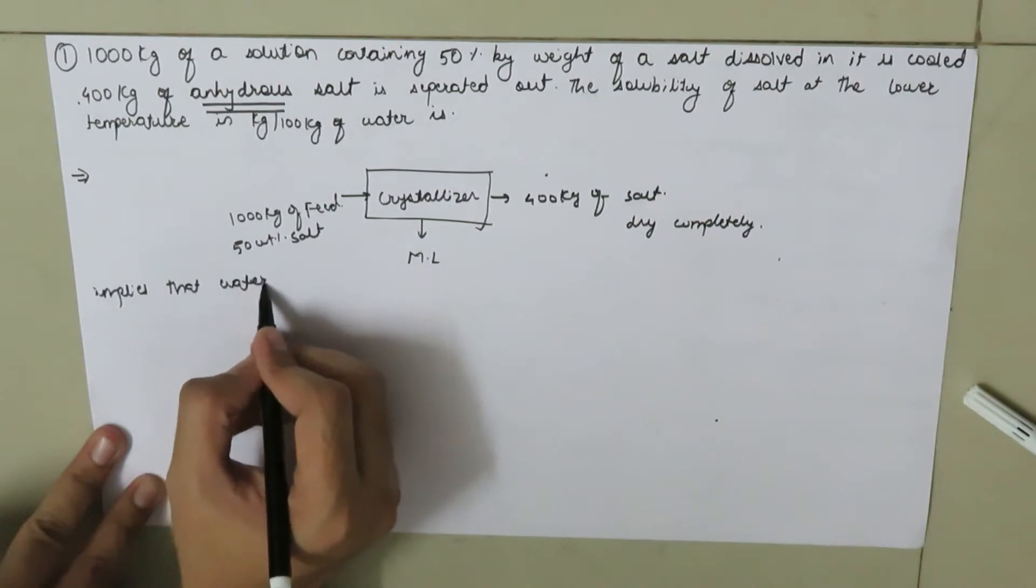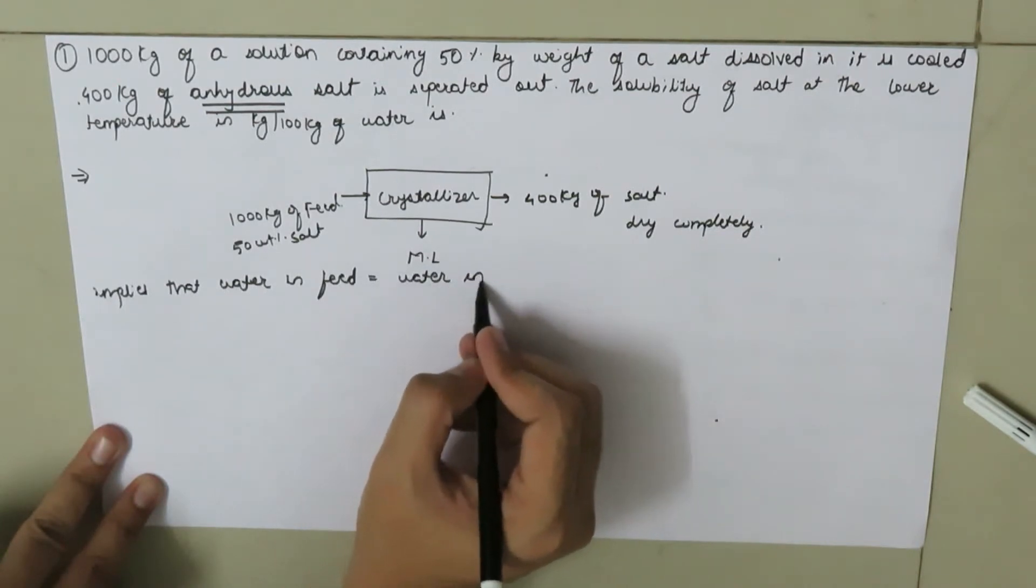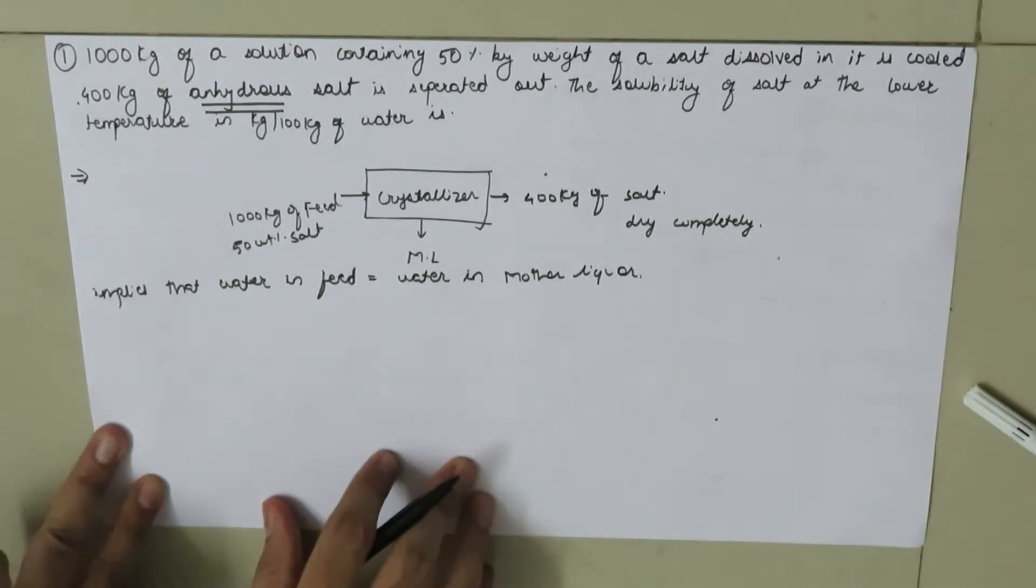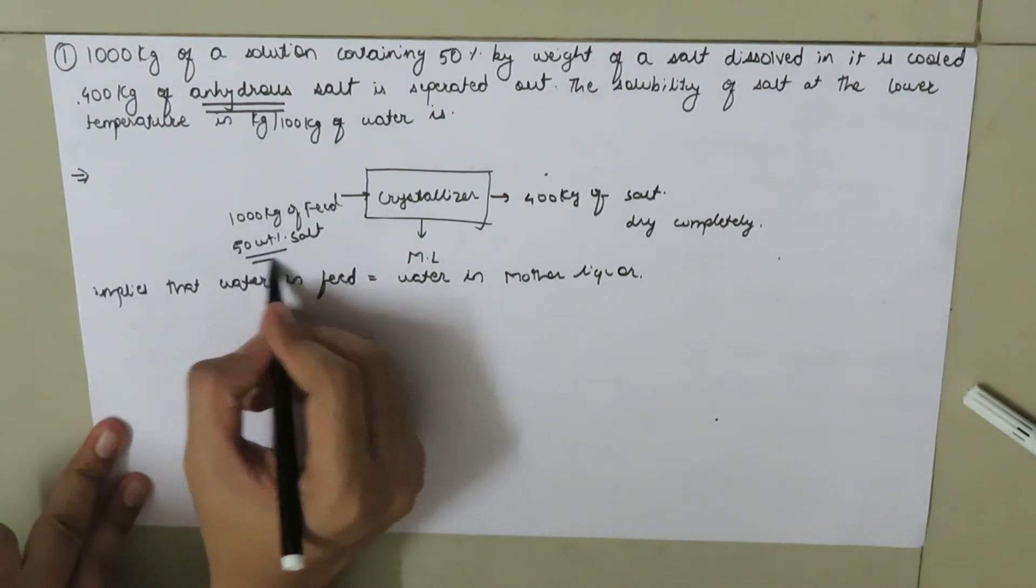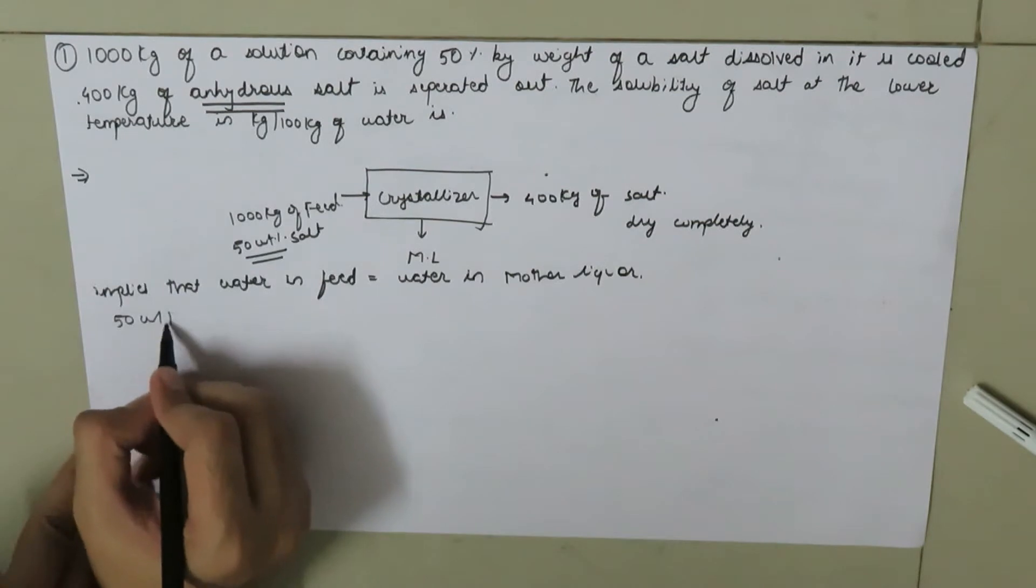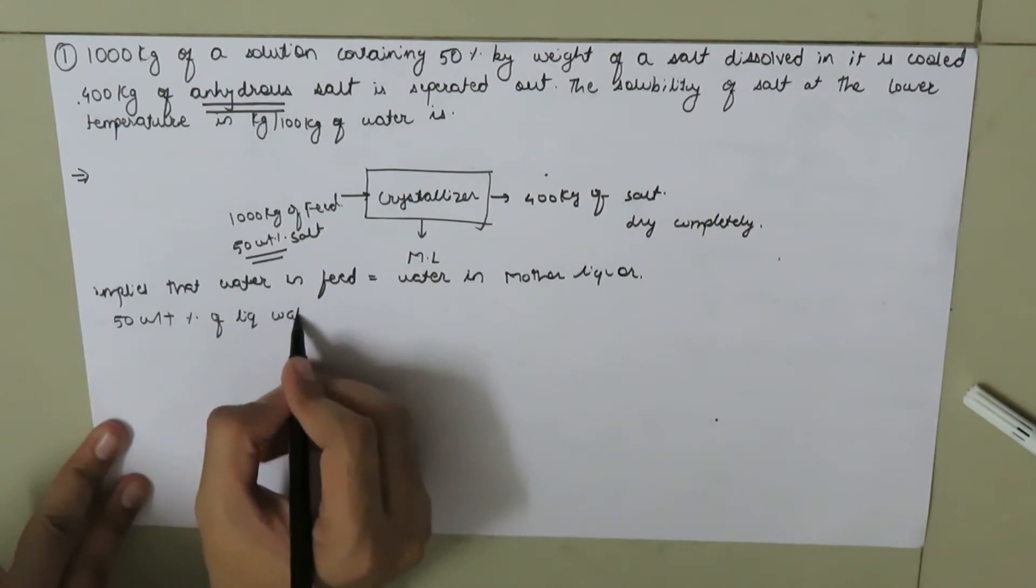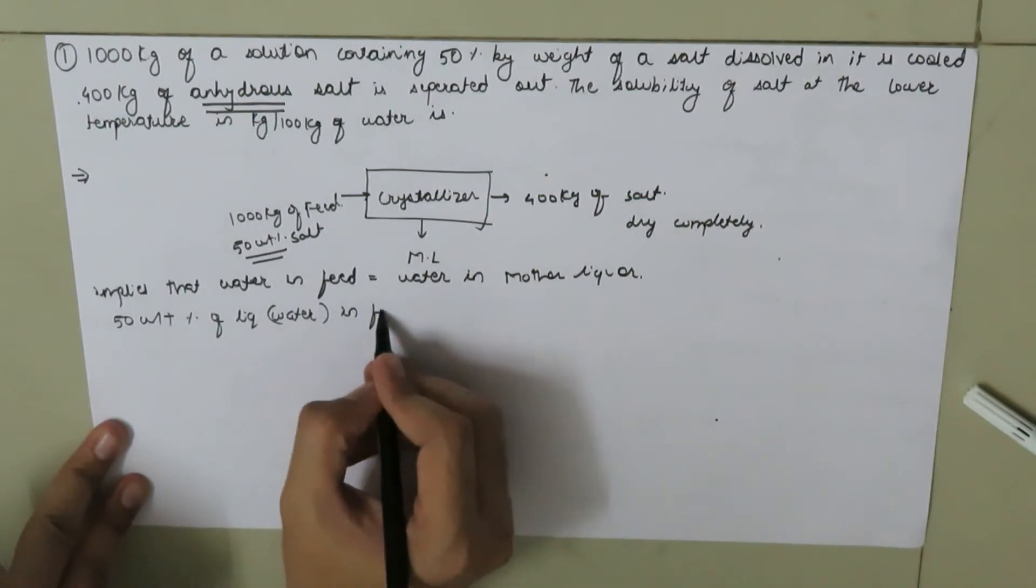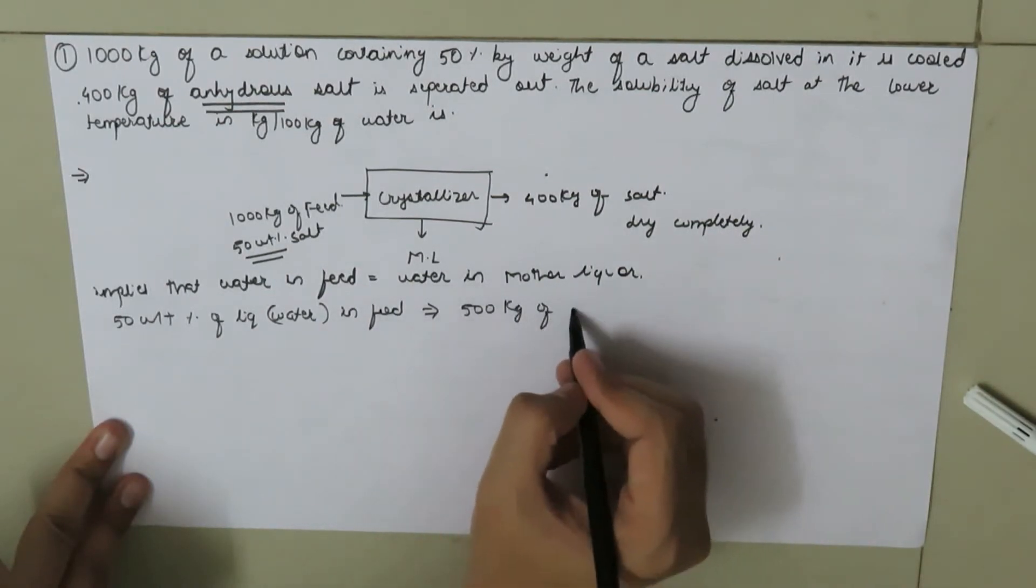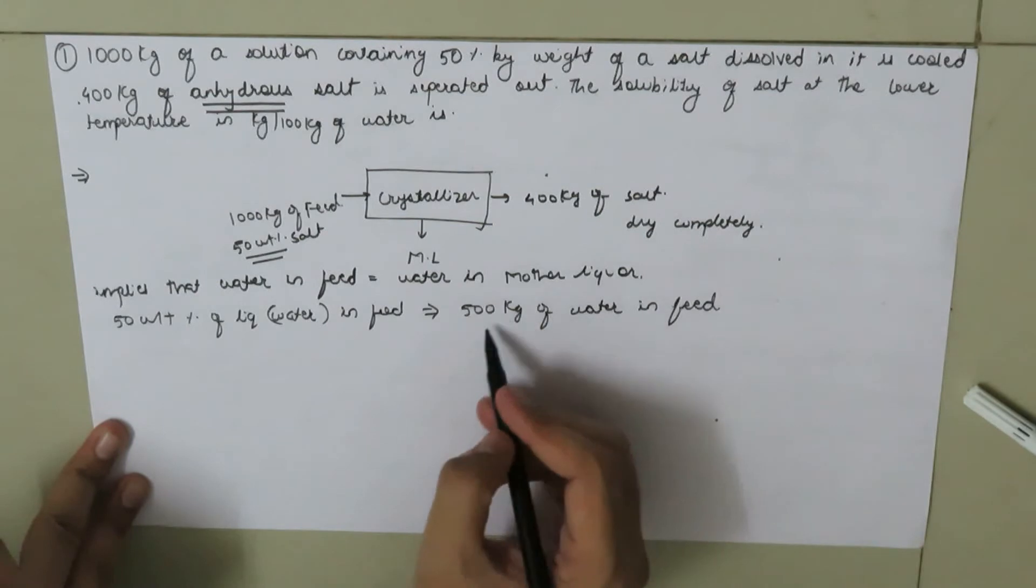water in feed is equal to water in mother liquor. Here we have 50 weight percent of salt, which means it has 50 weight percent of liquid. Let's consider this liquid is water in feed, which implies we have 500 kg of water in feed.